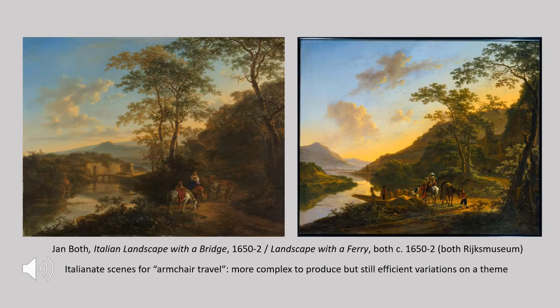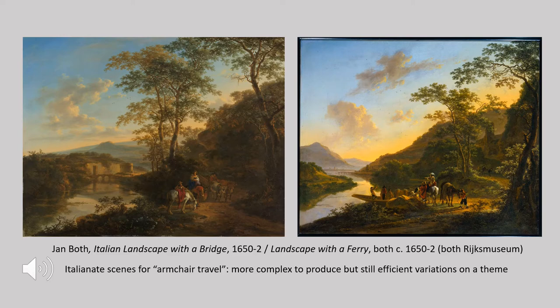Jan Both was an artist who traveled to Italy and spent his entire career recreating that landscape for viewers in the Netherlands who had either been to Italy or wanted armchair travel. His works are more elaborate, requiring lots of blue in the sky and detail in the terrain and figural action — more expensive and larger than van Goyen's work. Both simply depended on formulas that worked well in the past to produce these works efficiently and with great success for buyers willing to pay his prices.